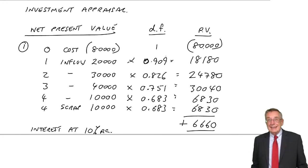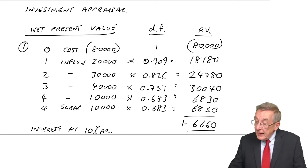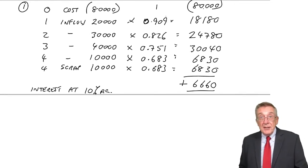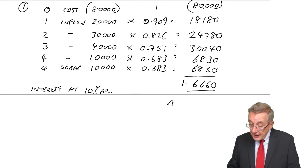And what is that? It's positive. So that is the cash surplus after accounting for the interest. And if it's a surplus, if it's positive, you accept the project.